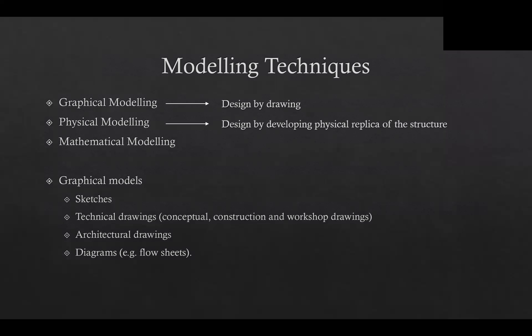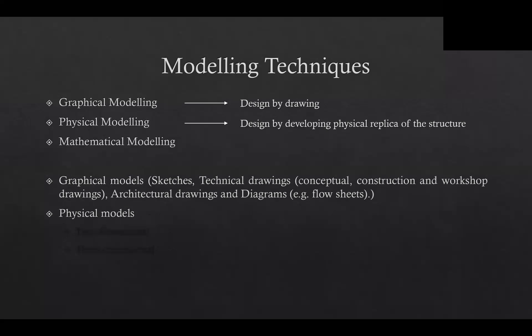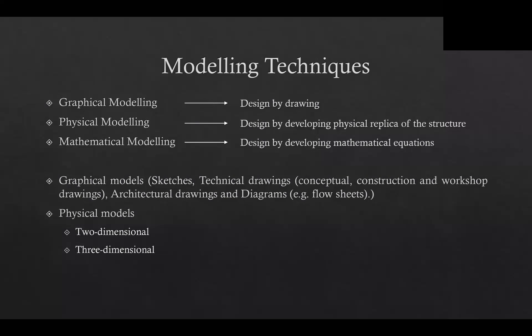Physical modeling involves design by developing a physical replica of the structure. The main advantage is that it provides a clear and objective view of the proposed design. Physical models can be either two-dimensional or three-dimensional. Finally, mathematical modeling is design by developing mathematical equations for simulation and optimization of design models. It is being more and more frequently applied as it can simulate the true situation with considerable accuracy.